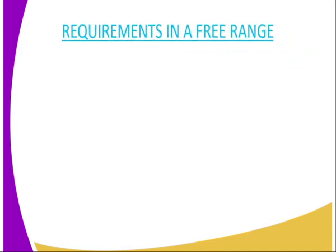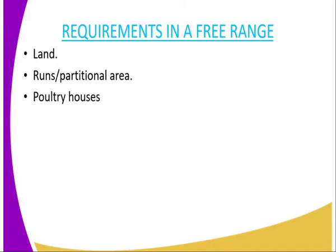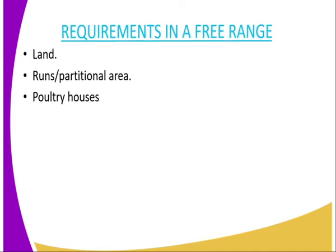Requirements in a free range system. The first requirement, you require a piece of land — you cannot practice this type of rearing system without having land. The second requirement is the runs, those are partitioned areas. The third requirement is poultry houses, where the poultry will be sleeping during the night or when daytime temperature increases, so they can shelter themselves in their houses.